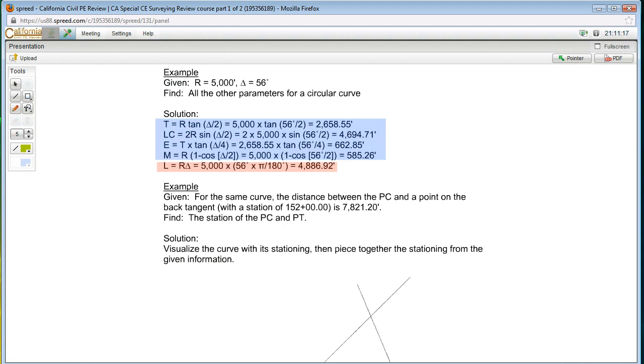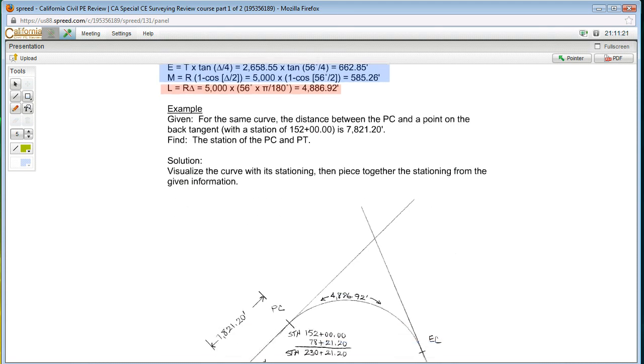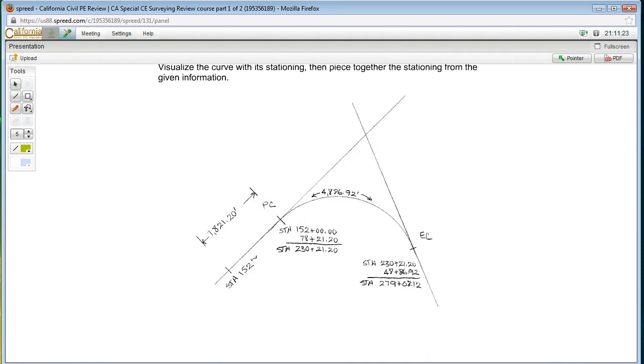So in my solution, I've done this. I've actually interpreted what they've given me. So what this thing says is that I have a curve. I have some tangents. They tell me that there's a point on the back tangent. So what I'm going to do is figure out stationing and I'm just arbitrarily going to say that stationing goes left to right in this direction.